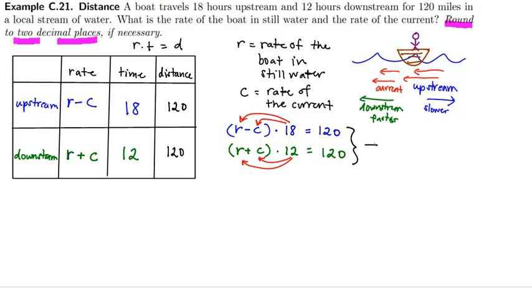And I would get 18r minus 18c equals 120, and then I would get in the second equation 12r plus 12c equals 120.